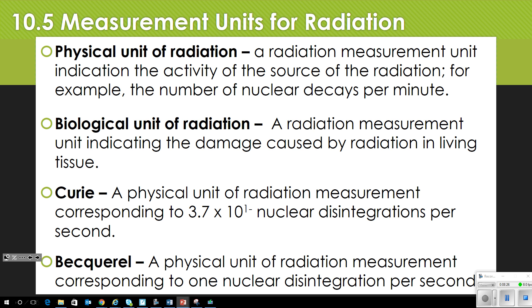Now, measurements and units of radiation. A physical unit of radiation indicates the activity of a source — for example, the number of nuclear decays per minute. A biological unit of radiation indicates the damage caused by radiation to living tissue. A curie is a physical unit corresponding to 3.7 × 10¹⁰ nuclear disintegrations per second. A becquerel is a physical unit corresponding to 1 nuclear disintegration per second. There are many different units for radiation, and you need to be familiar with them. These definitions are also available on Canvas and in your book.